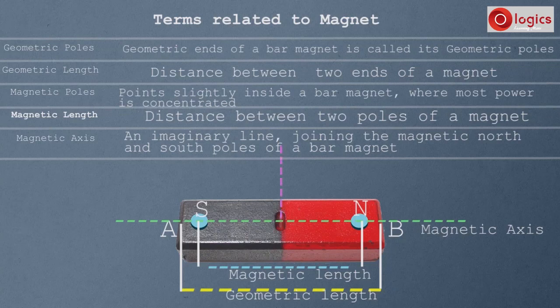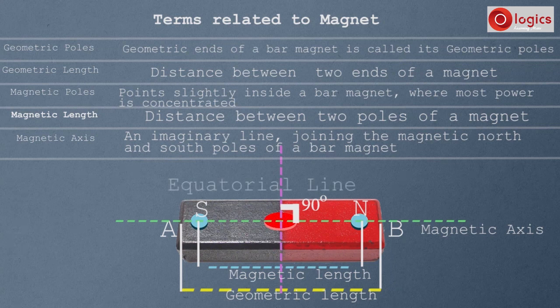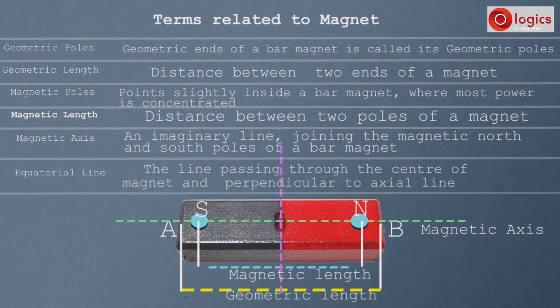This is a line. It is perpendicular to magnetic axis and passing through magnet center. This line is equatorial line. The line passing through the center of magnet.